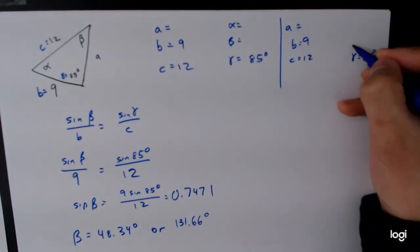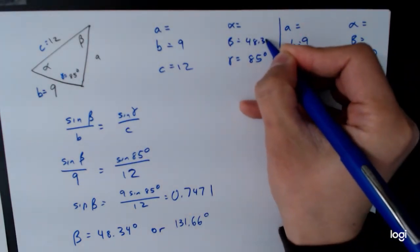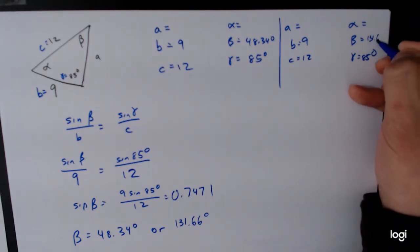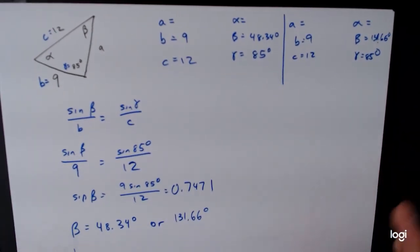Gamma is equal to 85 degrees, beta, alpha. So in one case, we have 48.34 degrees, and in another case, we have 131.66 degrees. Sorry, that's a little sloppy there. And so you can see that we still have to solve for A and alpha in both cases.